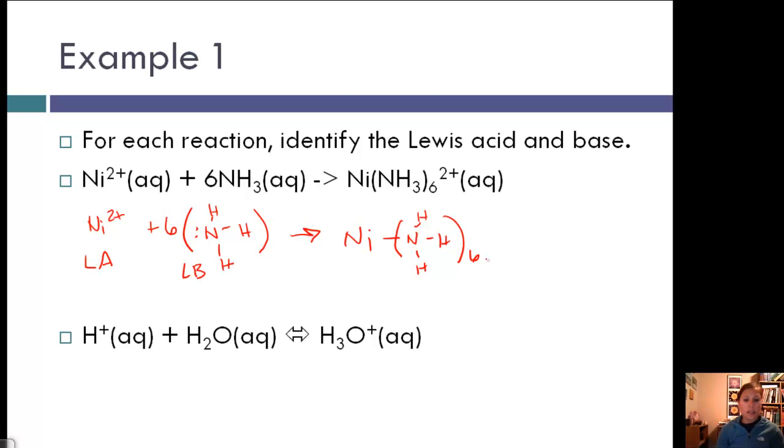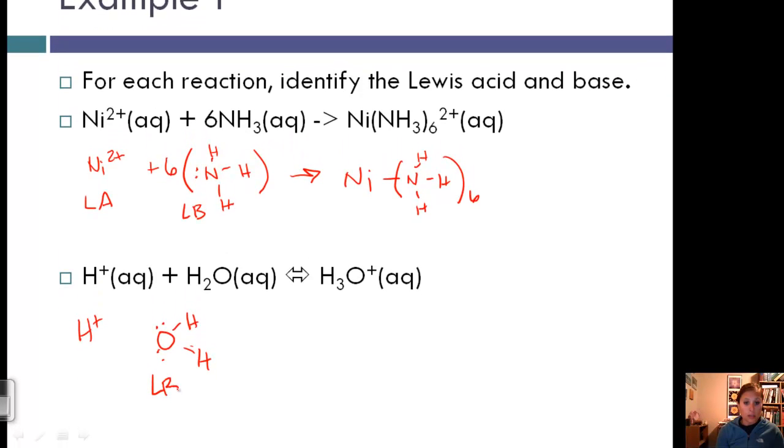Next, we have H⁺ plus H2O giving H3O⁺. Drawing the Lewis structure, water has two lone pairs on oxygen and two hydrogens. With these lone pairs, water is the Lewis base and H⁺ is the Lewis acid. We form the hydronium ion, and the Lewis acid accepted the lone pair from the Lewis base.